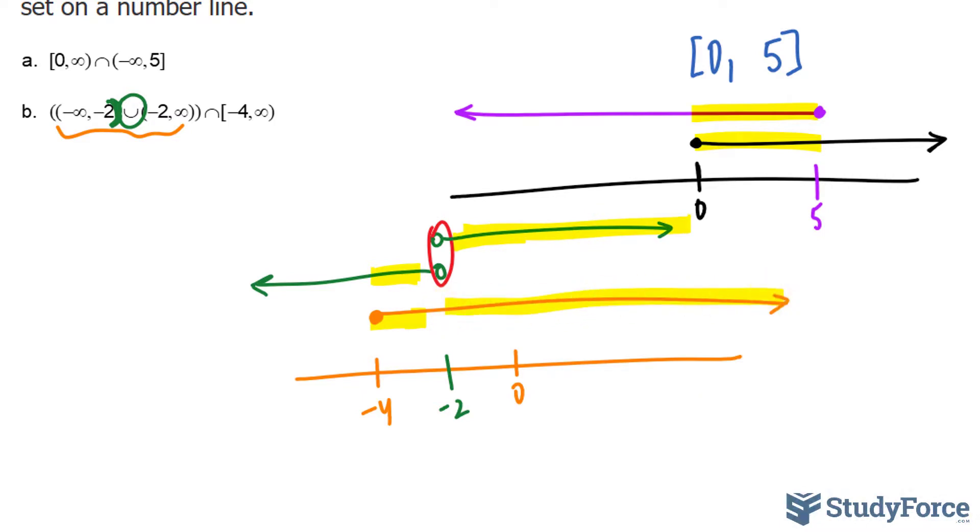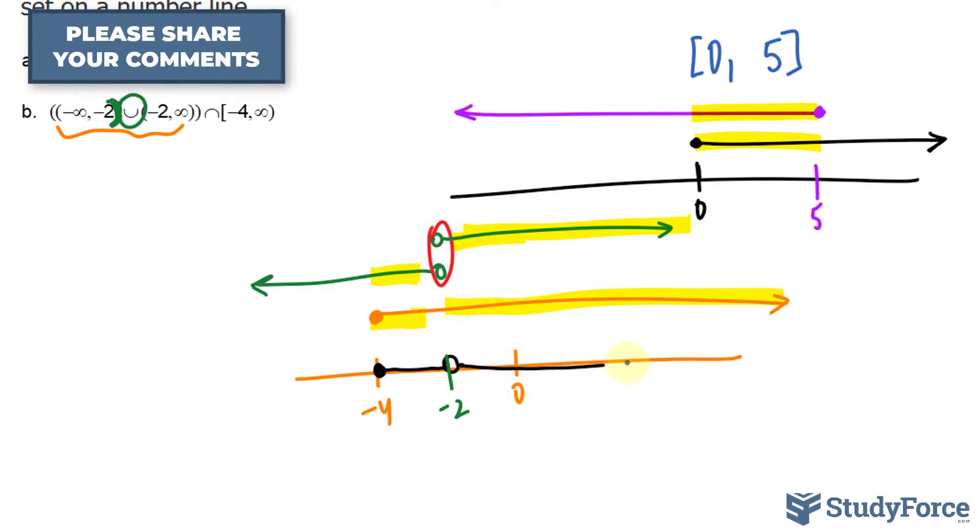So to show this on a number line, it would be everything from negative four and it can't be negative two because of that and beyond to the right.